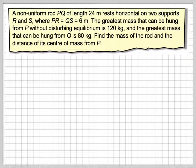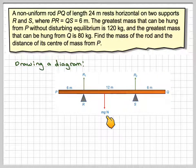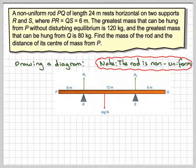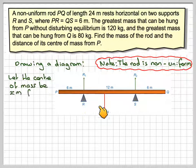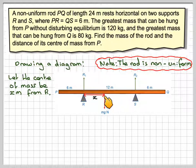What you've got to do first of all is draw a diagram. Now remember the rod is non-uniform so you need to put the center of mass somewhere but maybe not in the center because it's non-uniform, slightly to the left or to the right of the center. Note the rod is non-uniform. Let the distance from R to the center of mass be X. We're going to have to find X and we're going to have to find the value of M which is the mass of the rod.